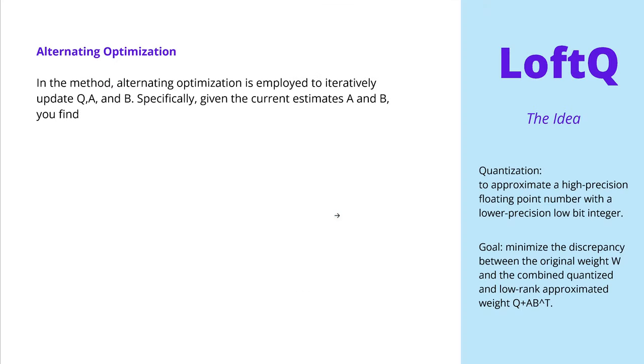And then, given this new Q, the new quantized Q, a singular value decomposition is used to find a low rank approximation, our famous A and B, that minimizes now the residual W minus Q. And this optimization is performed in alternating steps, careful, this is the most important idea here, between the quantization and the singular value decomposition. And this is to ensure that the quantization and the low rank approximations are balanced, and, this is the beauty, mutually reinforcing, as opposed to just one dominating the other, or causing significant degradation in the representation power.